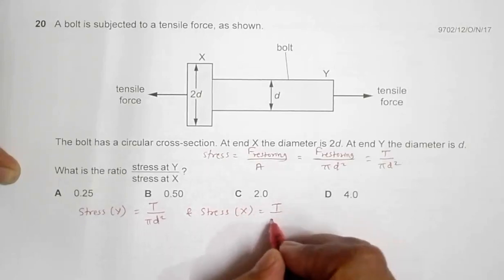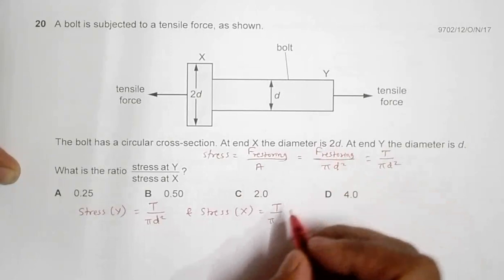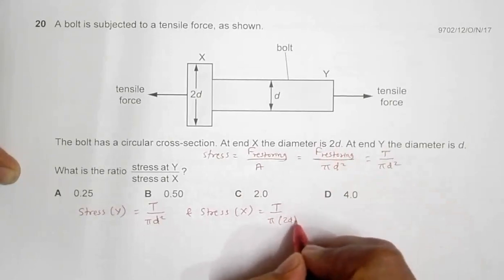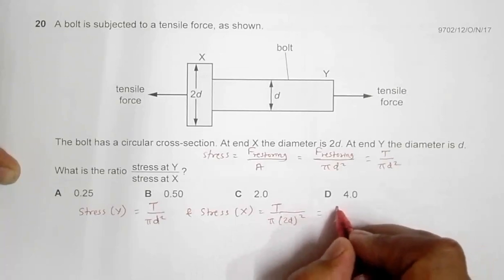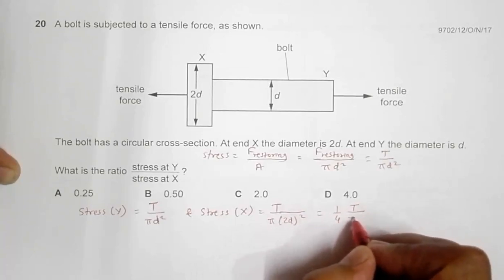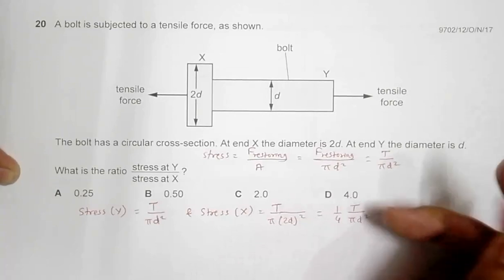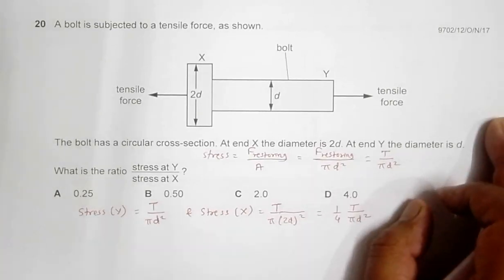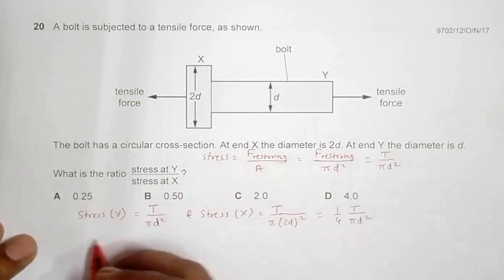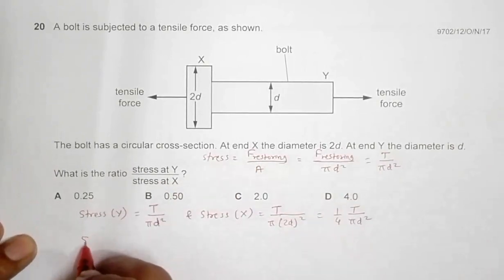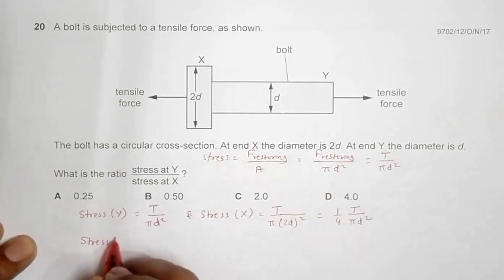Which equals 4, so it should be 1 by 4, T by pi D squared. Now if I use this in the formula, what we have to find is stress at Y by stress at X.